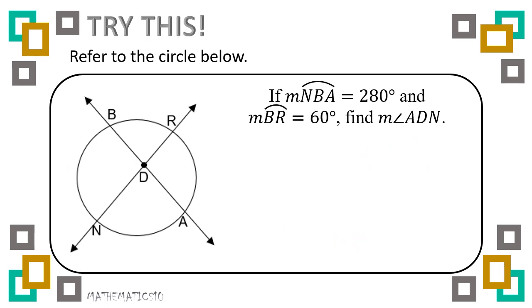For our next example, the measure of arc NBA is 280 degrees. Since the total degree measure of any circle is 360 degrees, we deduct 280 from 360 to find the remaining arc AN: 360 minus 280 equals 80 degrees. Additionally, the measure of arc BR is 60 degrees, and we are asked to find the measure of angle ADN.